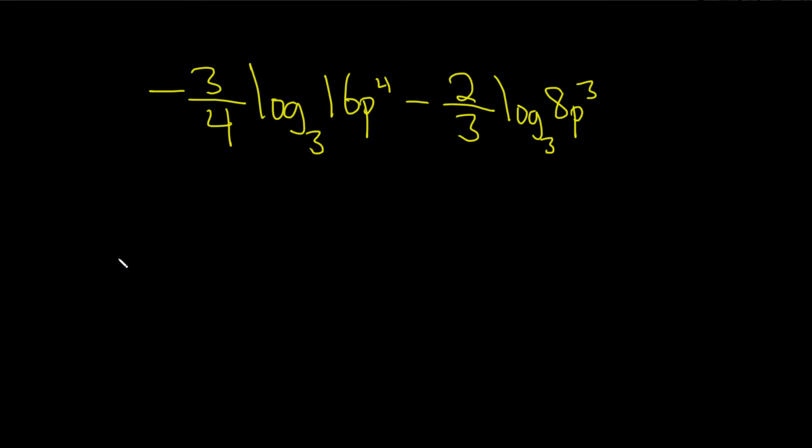In this problem, we have two logarithms, and they look quite messy. We have to write the answer as a single logarithm, so we have to use properties of logs to write this as one log, and we want to make sure the number in front of that one log is a 1, so the coefficient is 1.